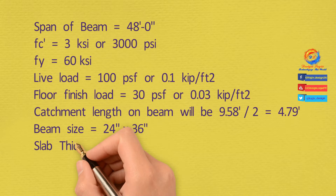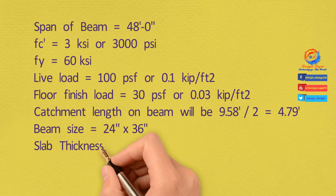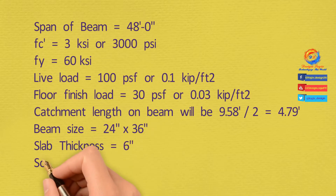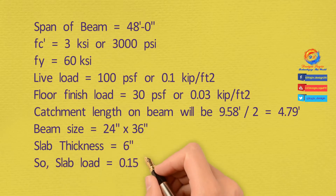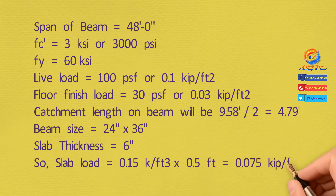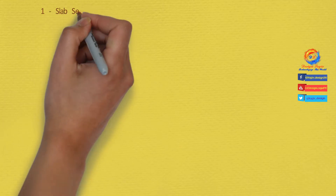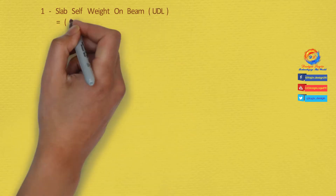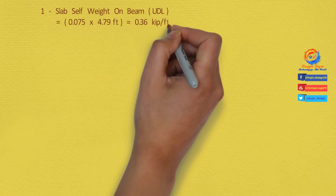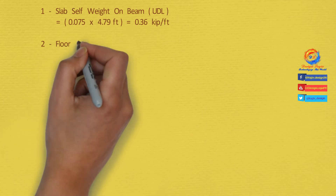Thickness of slab is equal to L/20, where L is one-way span of slab, so it is 9.58 × 12 / 20 equals 5.75, so I am using 6-inch thick slab. Slab load will be density of concrete which is 0.15 kip per cubic foot by slab thickness which is 6 inches or 0.5 feet, equals 0.075 kip per square foot. Slab self-weight acting on beam equals slab load 0.075 k/ft² × catchment length 4.79 feet = 0.36 kip per foot.